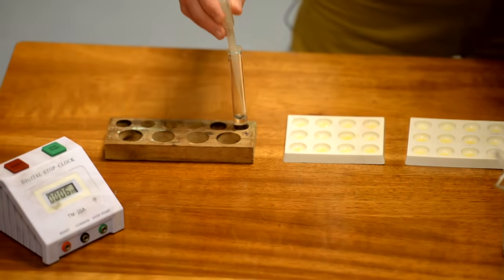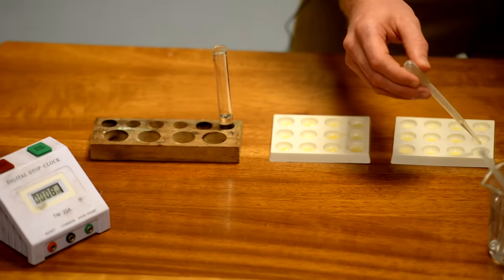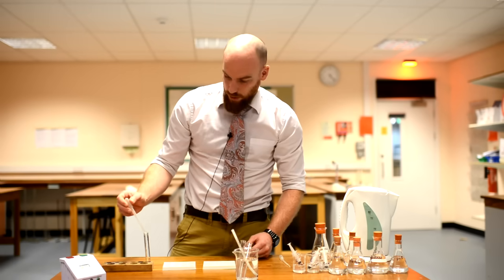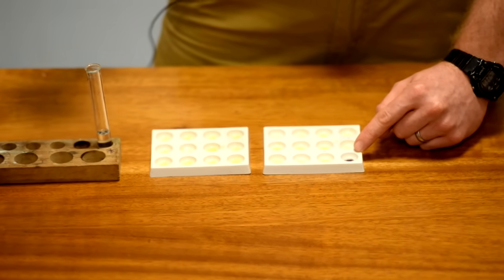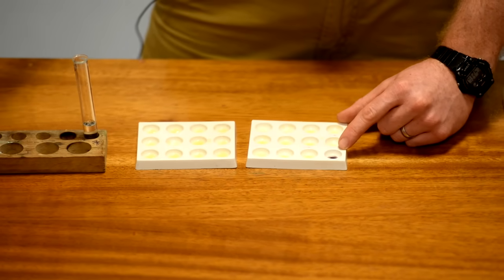You'll also need to take a zero reading immediately. This will show a black colour change indicating the presence of starch.